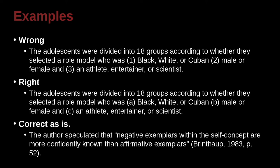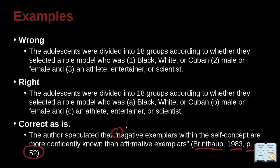We're looking at some lists here, a little bit of a review. Looking at this example: the author speculated that negative exemplars within the self-concept are more confidently known than affirmative exemplars. Here we have APA style. MLA is a bit different, but here what we have is the author's name, comma, the year, comma, and the page number. This is exactly what somebody has written. You must remember to include that page number right there.